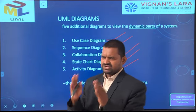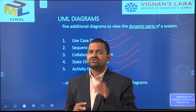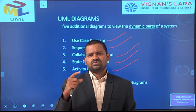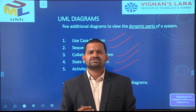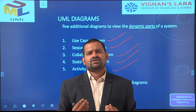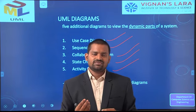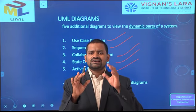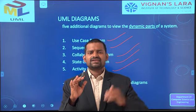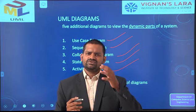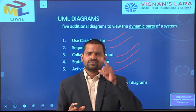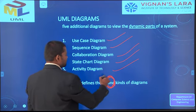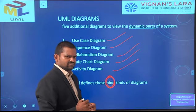Together, static and dynamic diagrams are called UML diagrams. If you want to develop any system — whether a library management system, airline reservation system, railway reservation system, or ATM system — you must understand both the structural and behavioral parts of UML. UML defines these nine kinds of diagrams to develop one complete system.